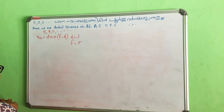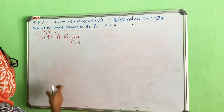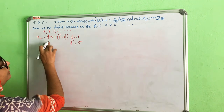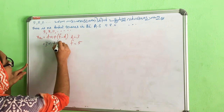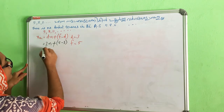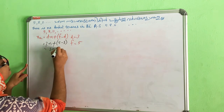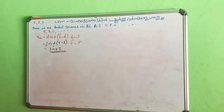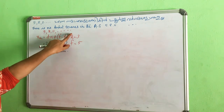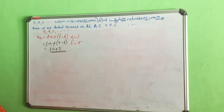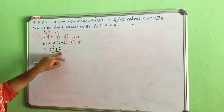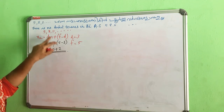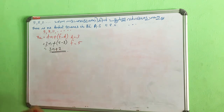So we have a₁ = 5, with common difference d = 3. The general term is 3n plus some constant. What is the arithmetic sequence? The general term is 3n plus 2. We have 5 is equal to 3(1) + 2, which gives 3 + 2 = 5. That checks out.